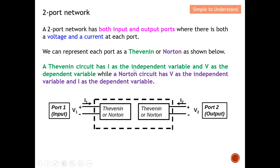A Thevenin circuit has I as the independent variable and V as the dependent variable, meaning the current is independent while voltage depends on I. A Norton circuit has the reverse: V becomes the independent variable and I becomes the dependent variable, meaning current depends on voltage.